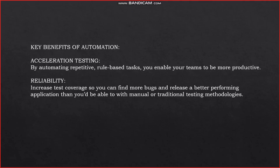What are the key benefits of Eggplant automation? You accelerate testing by automating repetitive, rule-based tasks, enabling teams to be more productive. Eggplant Digital Automation Intelligence (DAI) is the first AI-driven test automation solution with unique capabilities that make the testing process faster. With DAI, you can automate up to 80% of activities including test case design, test execution, and result analysis, allowing teams to rapidly accelerate testing and integrate with DevOps at speed.